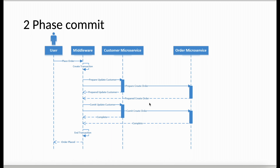The coordinator sends 'prepare update customer' and 'prepare create order'. Once it gets positive responses from the customer service and the order service, it starts the next phase — the commit phase — sending 'commit update customer' and 'commit create order'.